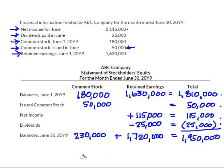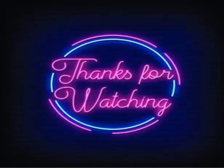So this would be the statement of stockholders' equity for the month ending June 30th. It wasn't a real complicated example, but I certainly hope that it helped. Thanks so much for watching.